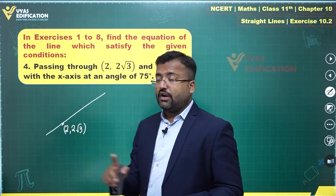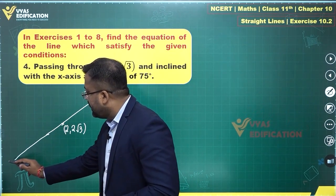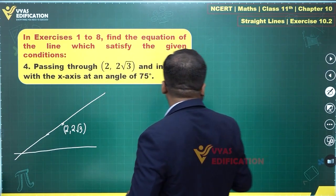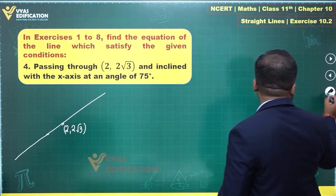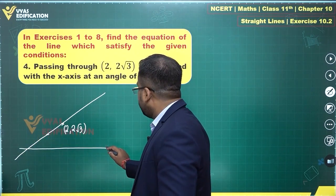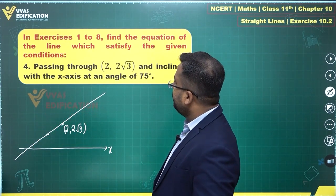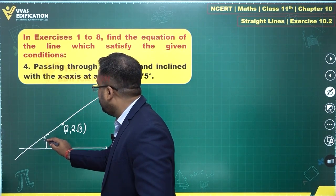Now this diagram is not to scale, mind you. 2 comma 2 root 3, x-axis will be somewhere here for that matter. X-axis will be somewhere here. This is the x-axis, let's suppose.